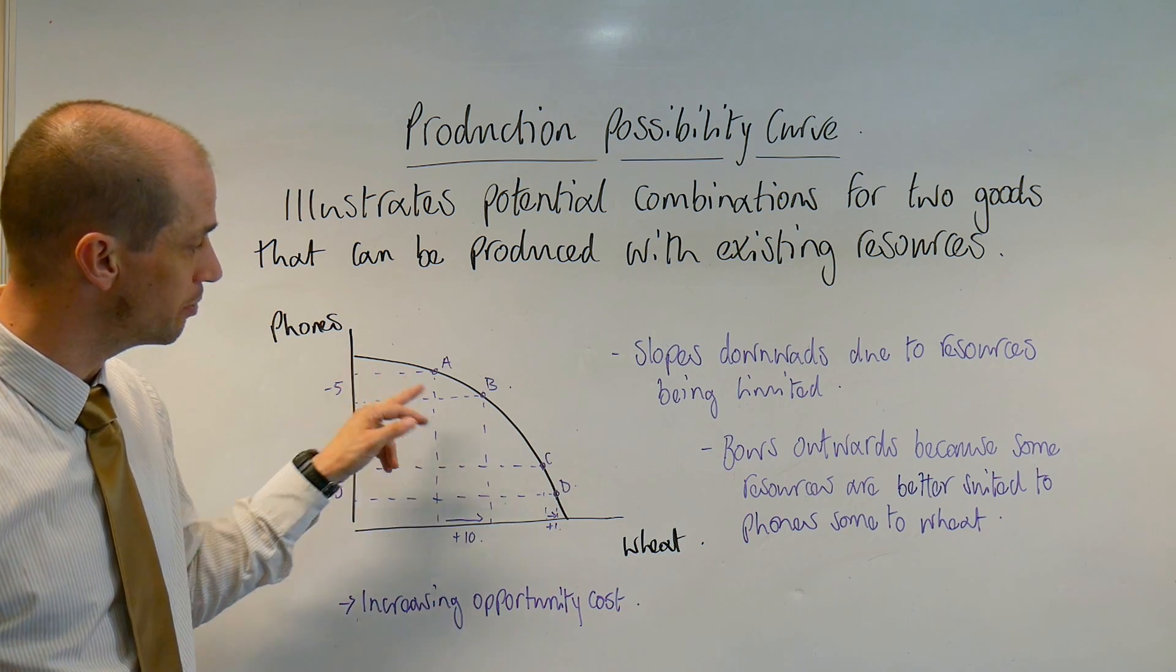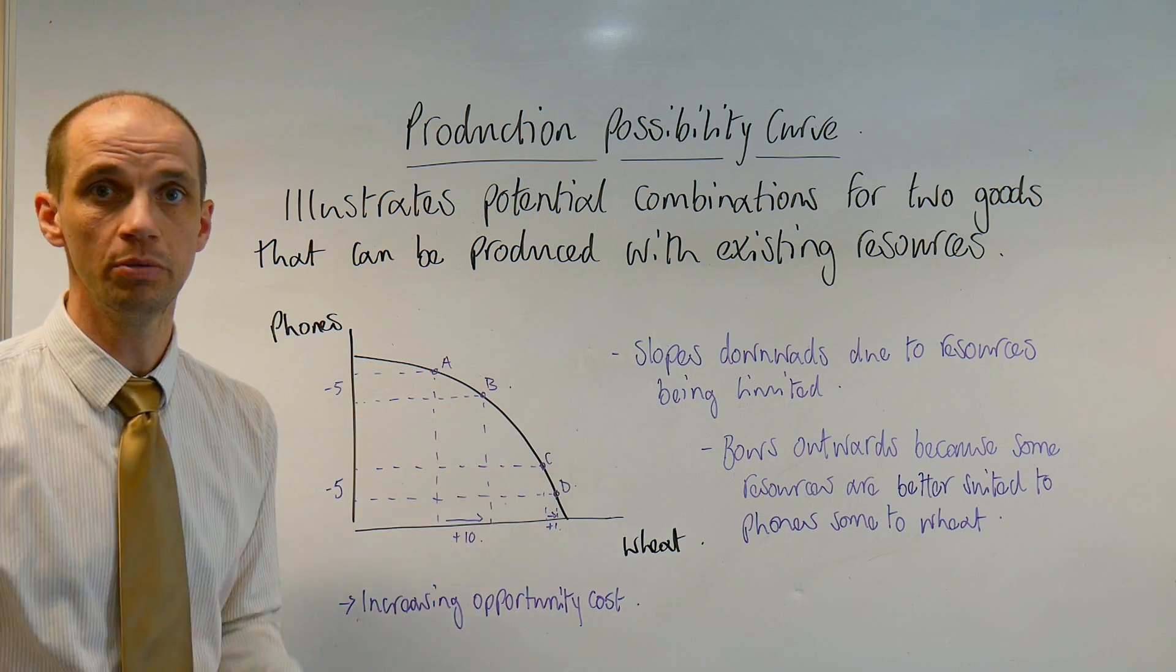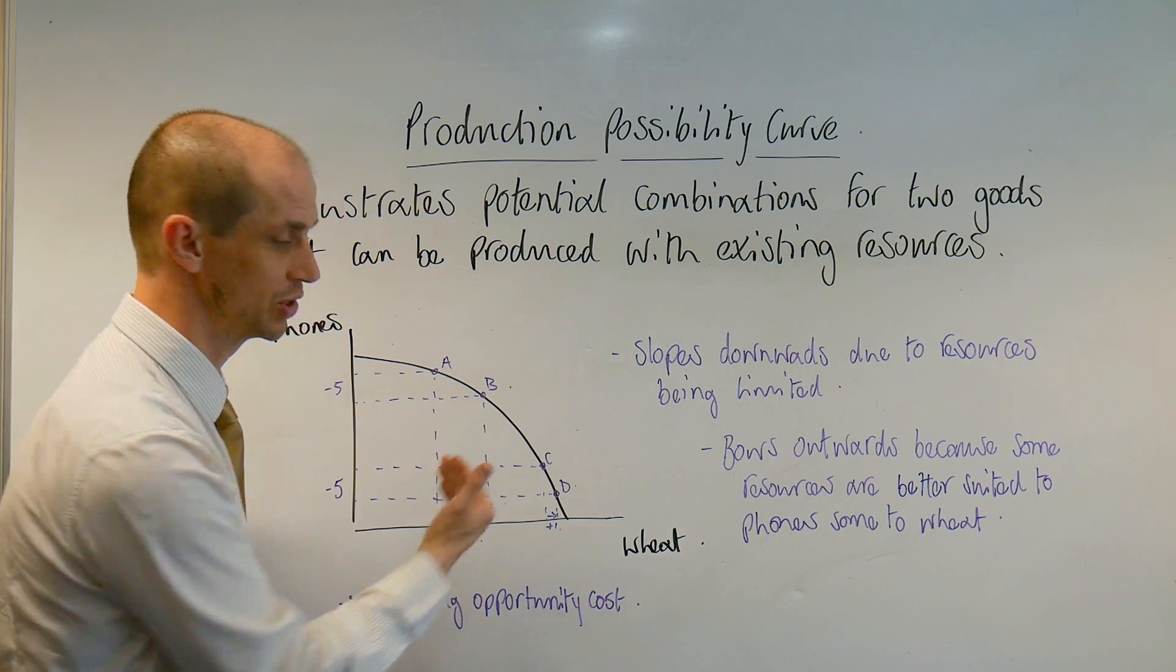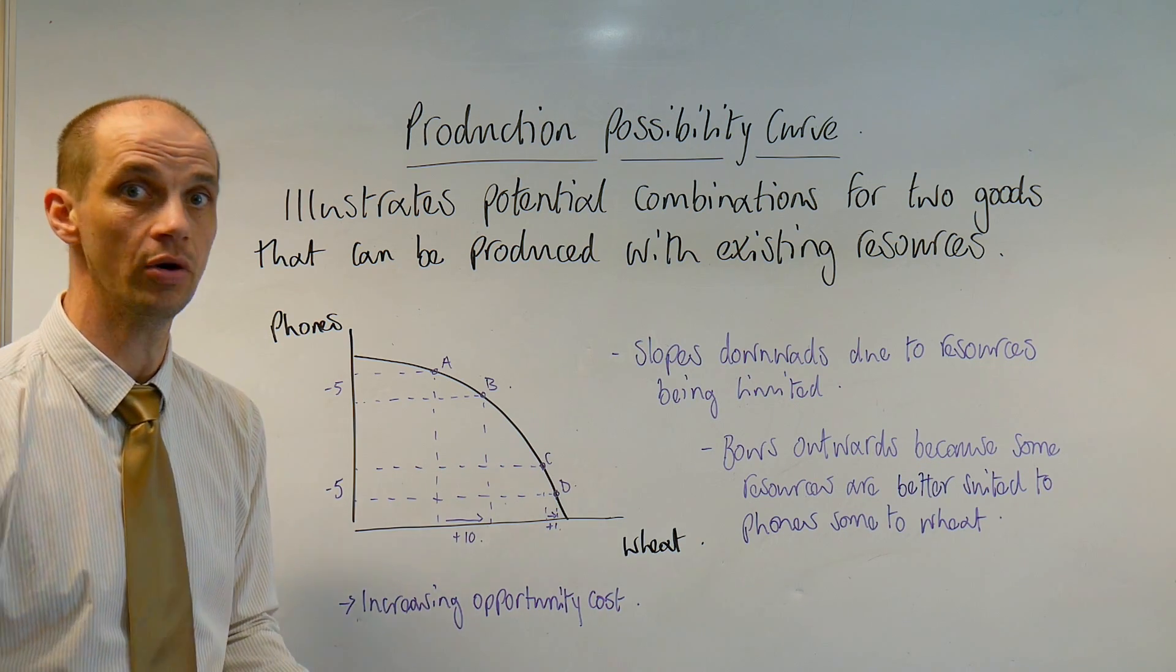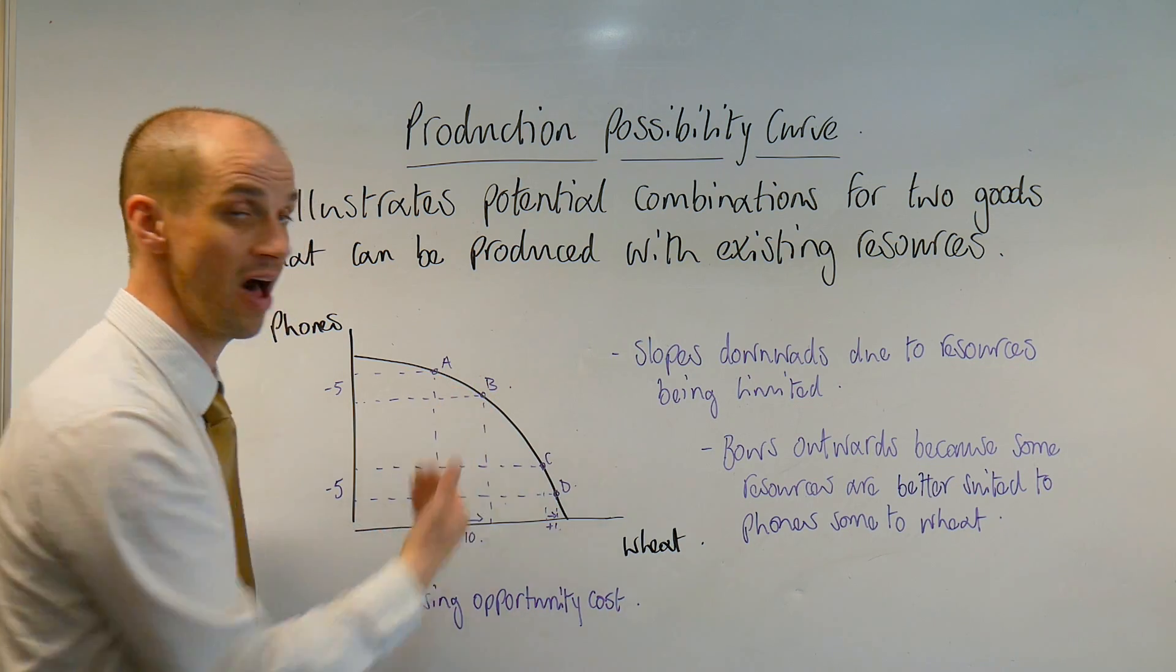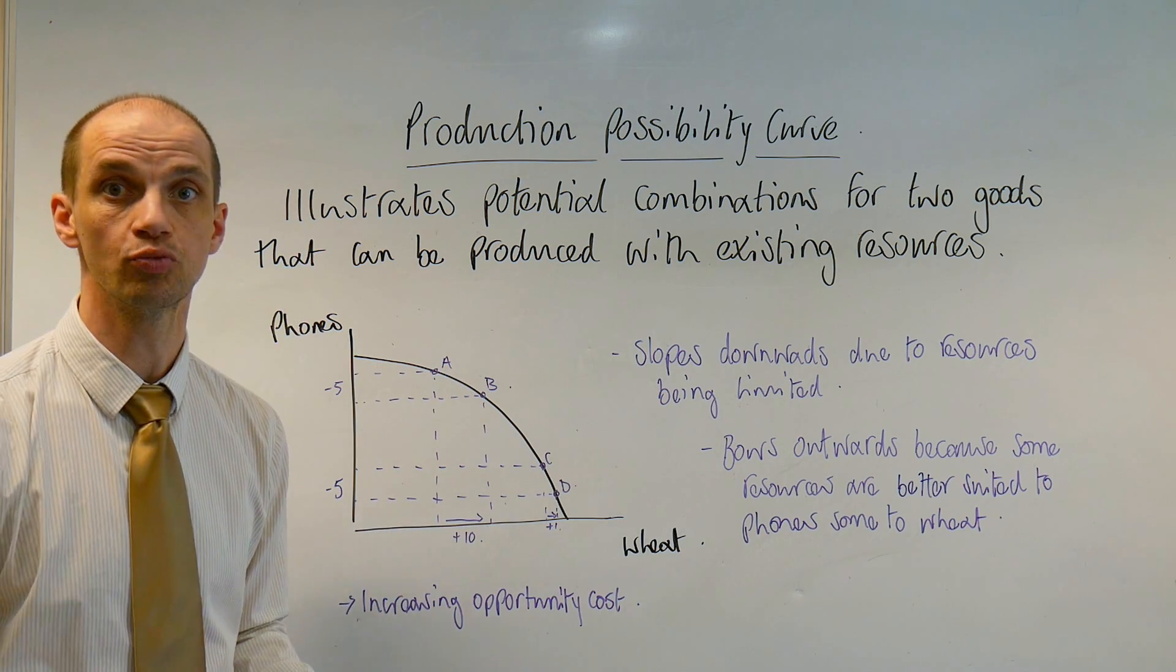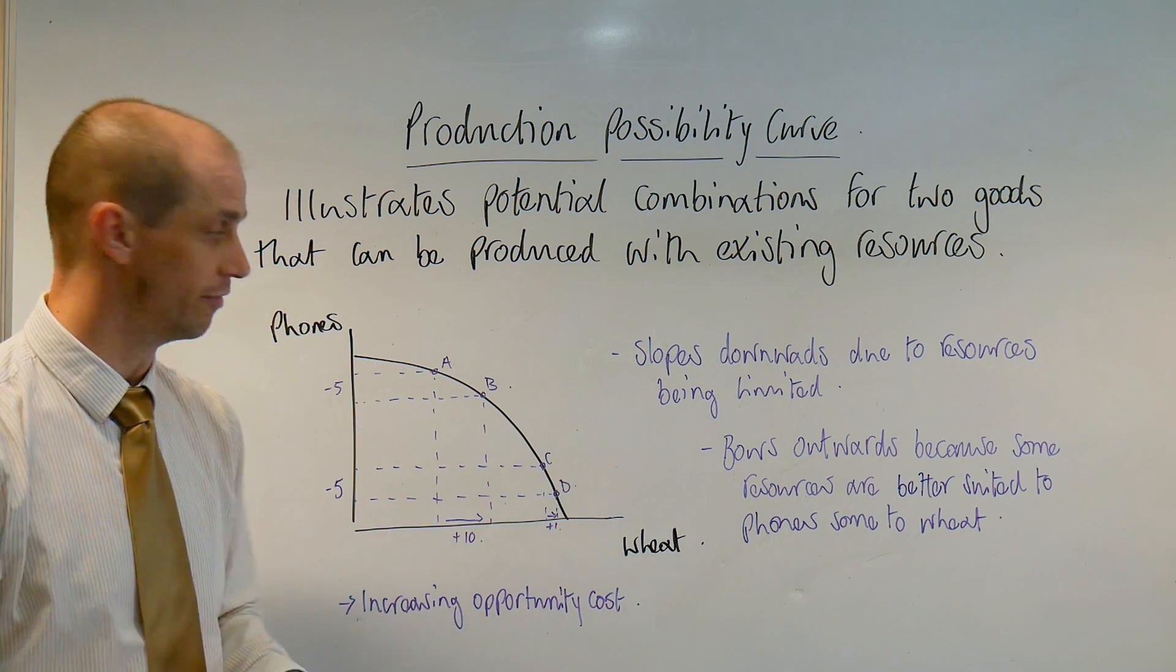Now, achieving any point A, B, C, D would be deemed to be productively efficient because all of the actual resources are being fully utilized to ensure that the level of production is reaching that boundary, reaching the far edge of that boundary.